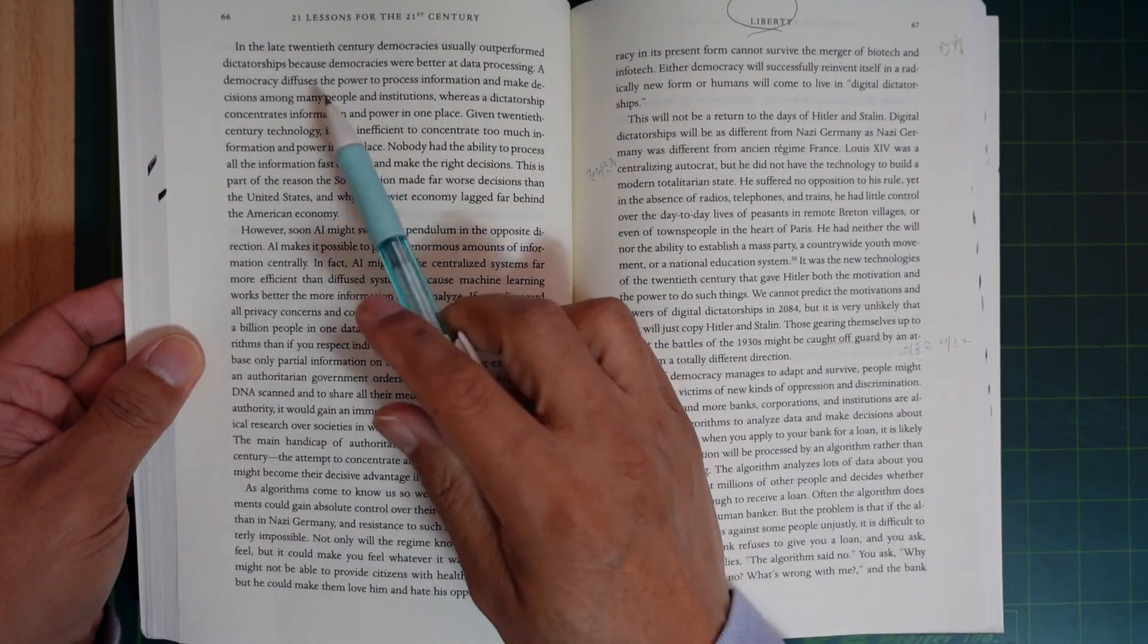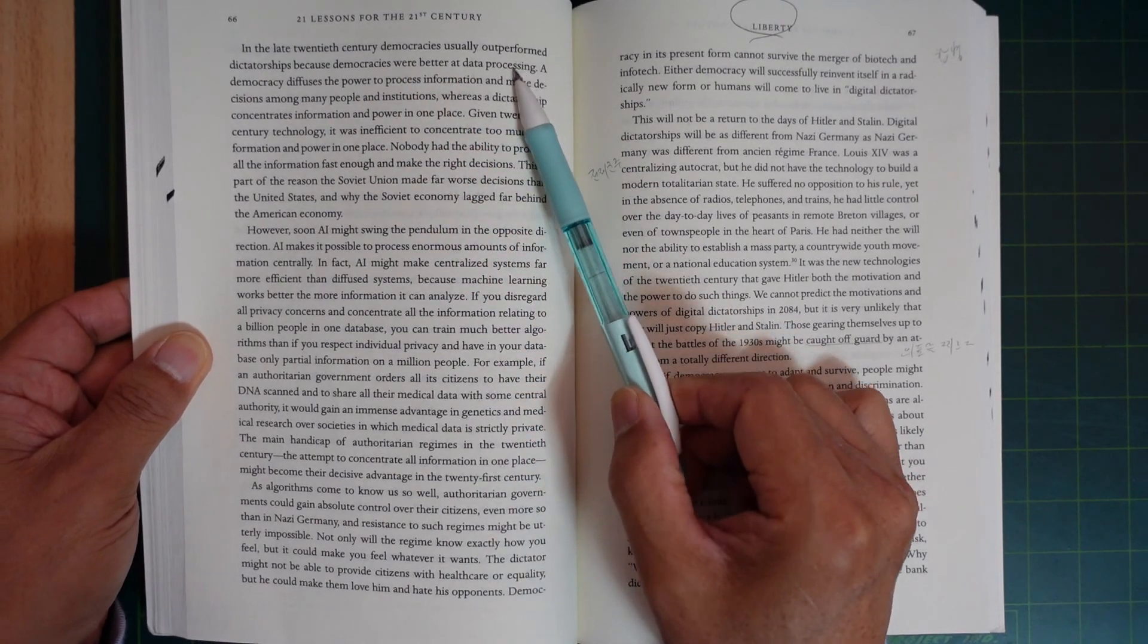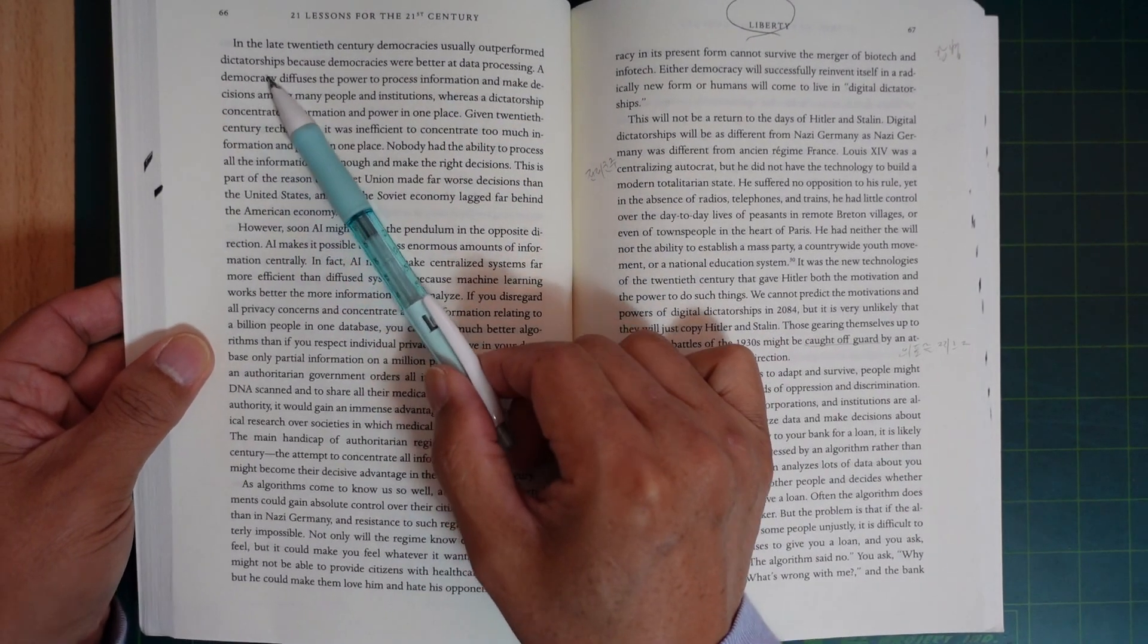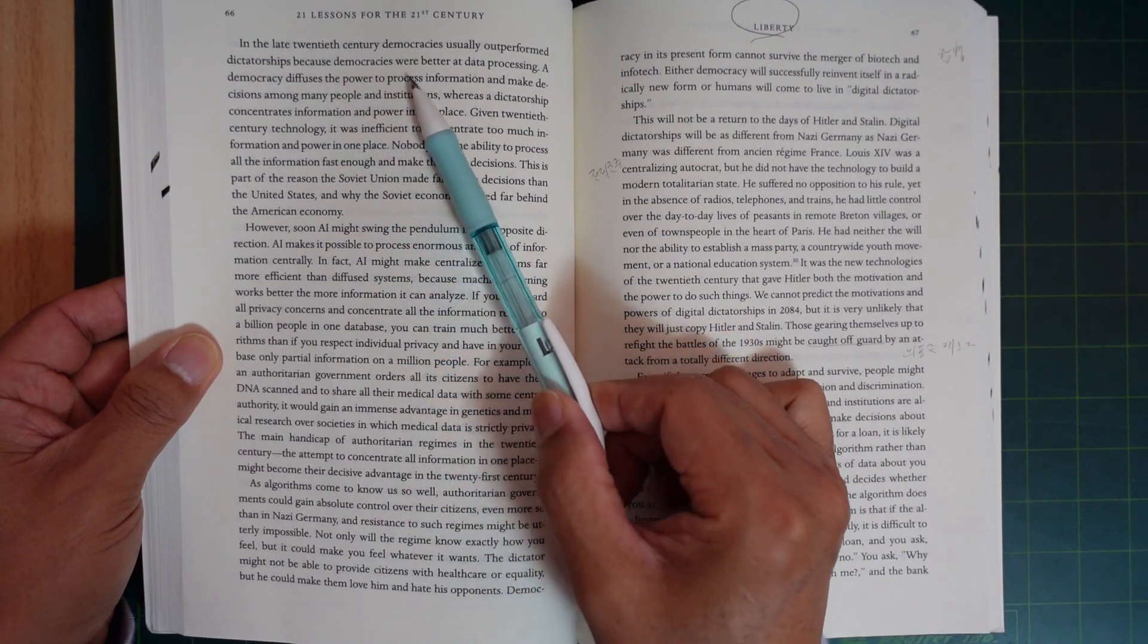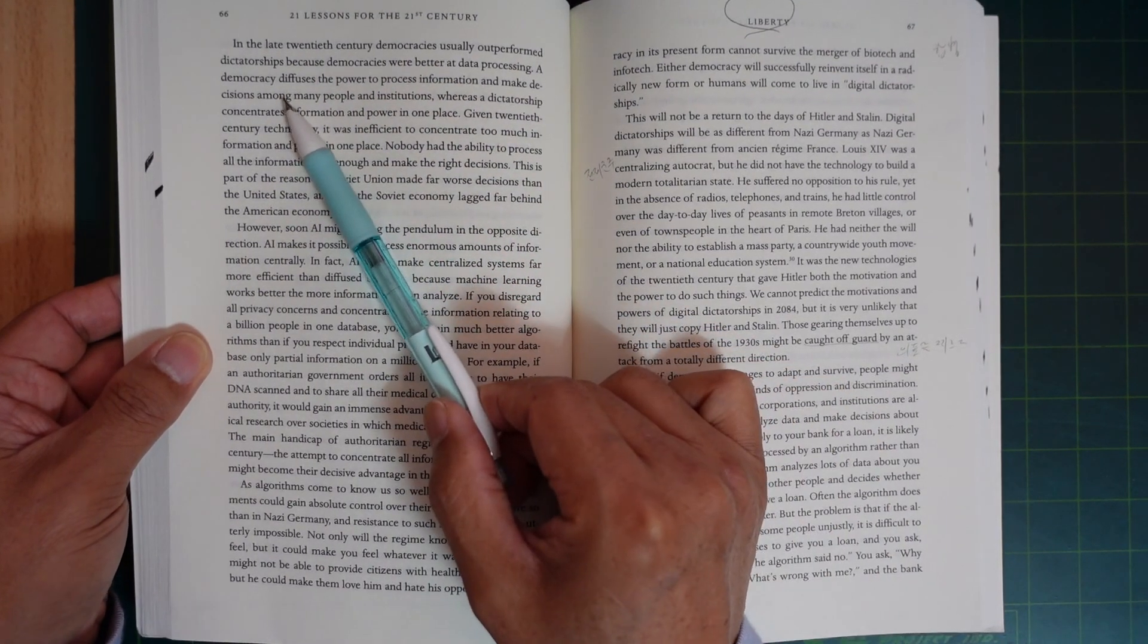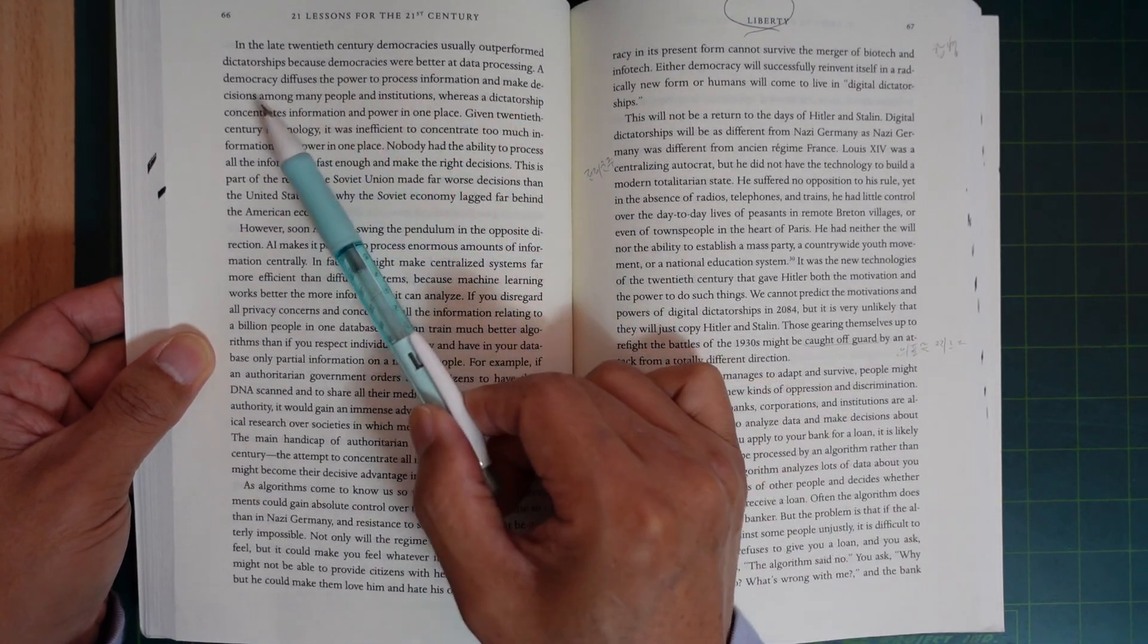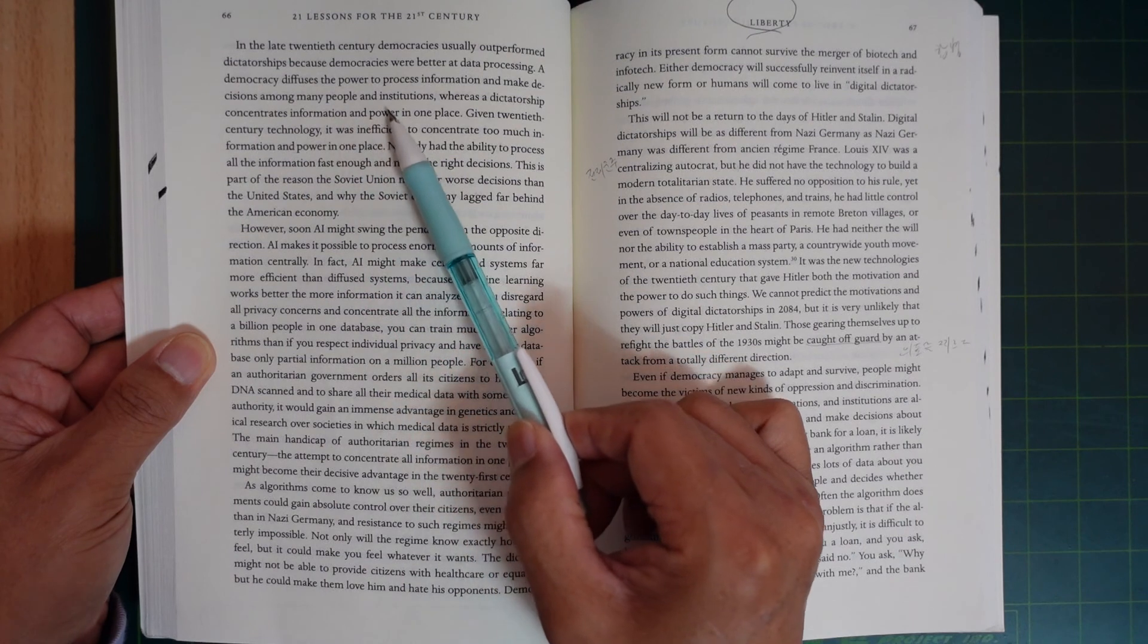In the late 20th century, democracies usually outperformed dictatorships because democracy was better at data processing. Democracy diffused the power to process information and make decisions among many people and institutions.